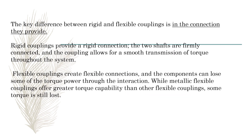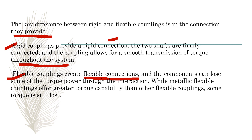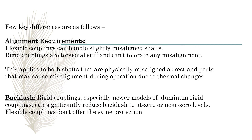The key difference between rigid and flexible coupling is the connection they provide. In rigid coupling, as the name says, it cannot move — it provides a rigid connection where the two shafts are firmly connected, allowing smooth transmission of torque throughout the system. In flexible coupling, it creates a flexible connection and the component can lose some torque power. Even metallic flexible couplings, which offer greater torque capability than other flexible couplings, still lose some torque due to misalignment. In rigid coupling, the torque is almost the same from the driver to the driven part.